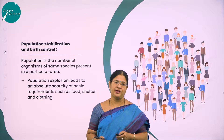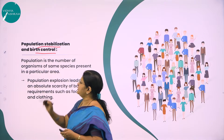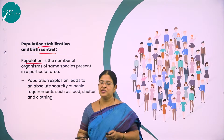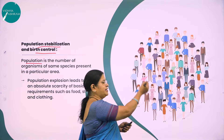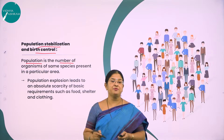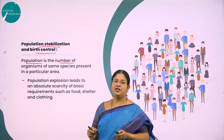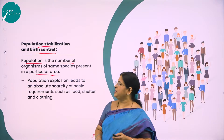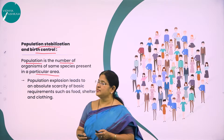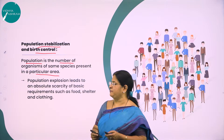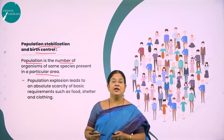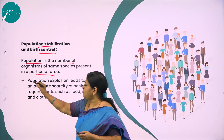Moving on to the next very important concept called population stabilization and birth control. Population is the number of organisms of the same species present in a particular area over a particular period of time. There is now a rapid increase in population, which is called population explosion.